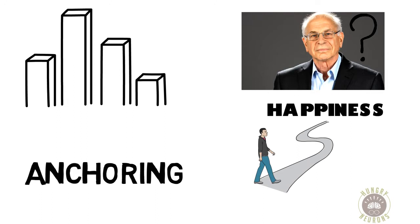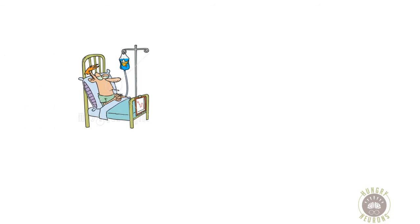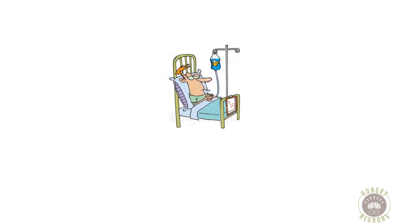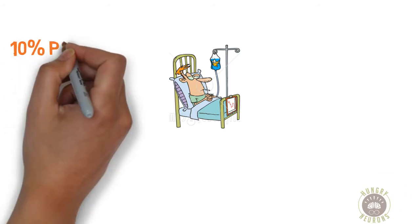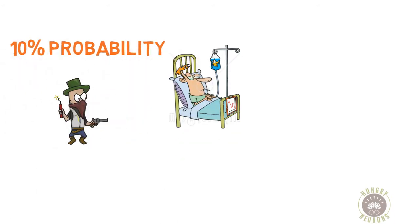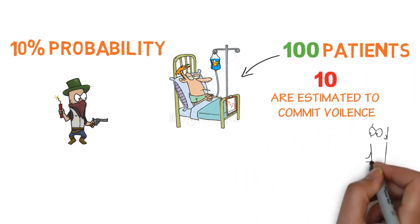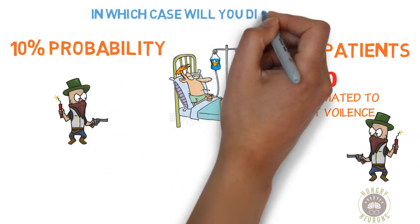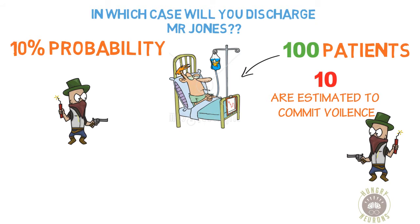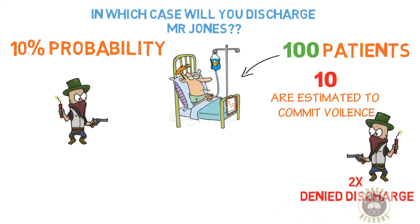So what do you think — do we understand statistics? Mr. Jones has to be discharged from a hospital and there are two copies of his report. Report one says Mr. Jones has a 10% probability of committing an act of violence. Report two states that of every 100 patients similar to Mr. Jones, 10 are estimated to commit an act of violence. In which of the two cases would you be willing to discharge Mr. Jones? Twice as many respondents denied the discharge in the second case, because a rare event expressed in terms of relative frequency seems more likely to occur than when expressed as a statistical probability.